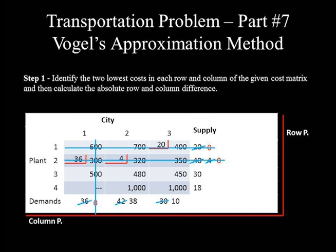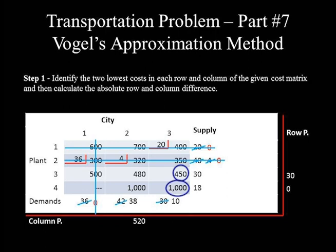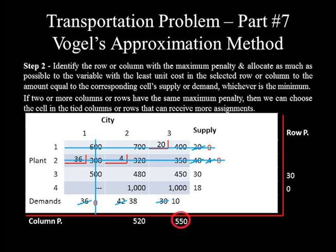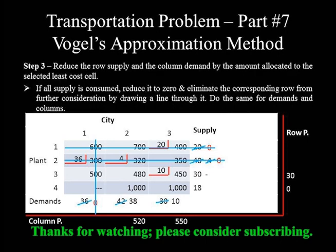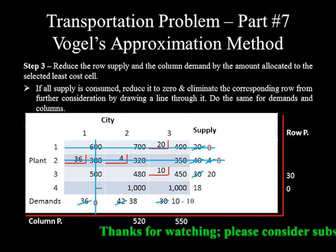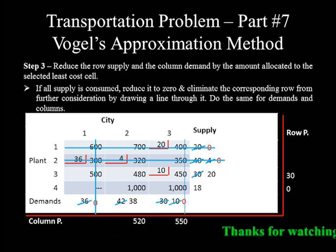Continuing with penalties for the remaining undeleted rows and columns: row 3 penalty = 480 − 450 = 30, row 4 penalty = 0. Column 2 penalty = 1,000 − 480 = 520, column 3 penalty = 1,000 − 450 = 550. The maximum penalty is 550, so column 3 is next. The smaller unit cost in column 3 is 450, with supply 30 and demand 10. Allocating 10 units reduces demand from 10 to 0 and supply from 30 to 20. Column 3 is deleted because C3 demand is reduced to zero.